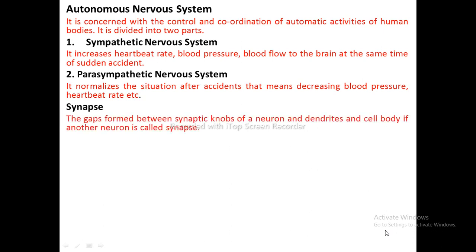Synapse: The gap formed between the synaptic knobs of a neuron and the dendrites or cell body of another neuron is called a synapse.